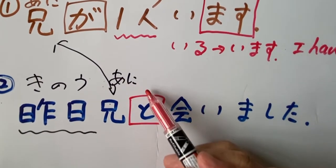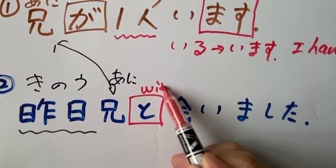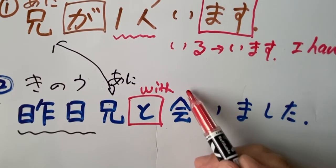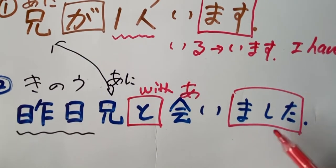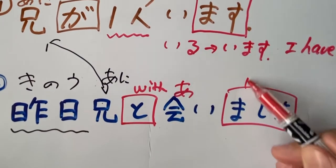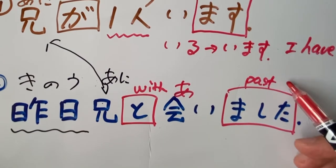It is the particle. Ne. It's here is like with. With. Aimashita. Ne. Aimashita. Ne. Remember, a verb plus mashita, this is the past form. Ne. The past form.